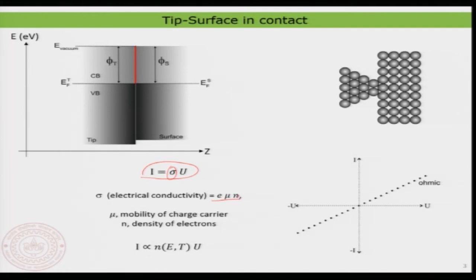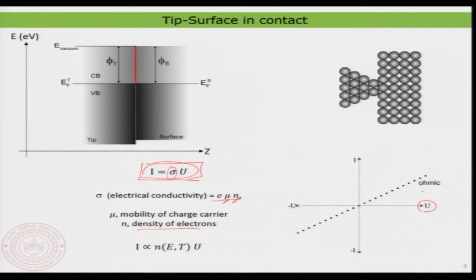In this contact case the current is directly proportional to voltage, with a constant known as the electrical conductivity. The electrical conductivity is written using the charge of the charge carrier (electron), something known as mobility, and n which is the density of electrons. So the density of electrons, the mobility, and the electrical charge determine the current, and the current is just proportional to the voltage.